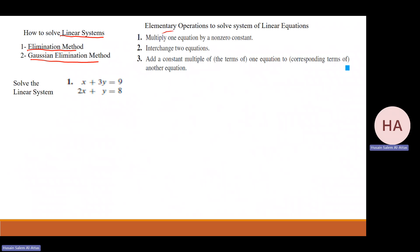To solve a system of linear equations using elimination, we use elementary operations. The first operation: if I multiply the first equation by a number, that will not change the system. For example, multiplying the first equation by three gives 3x + 9y = 27, and the other equation stays the same — the system is unchanged.